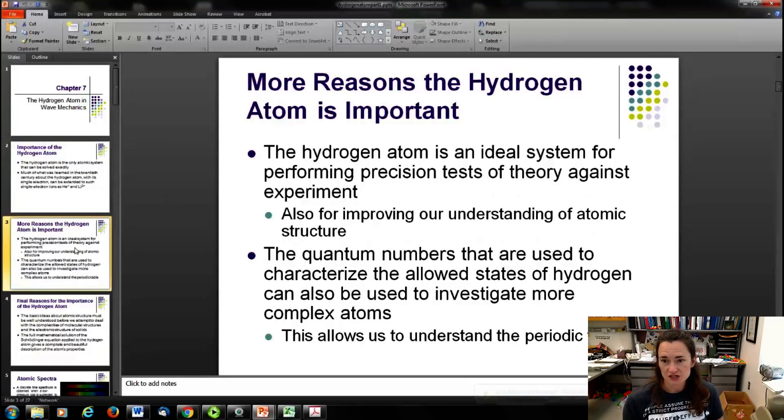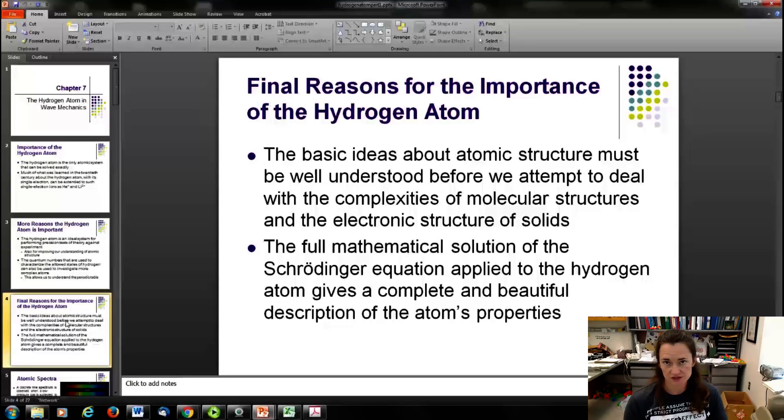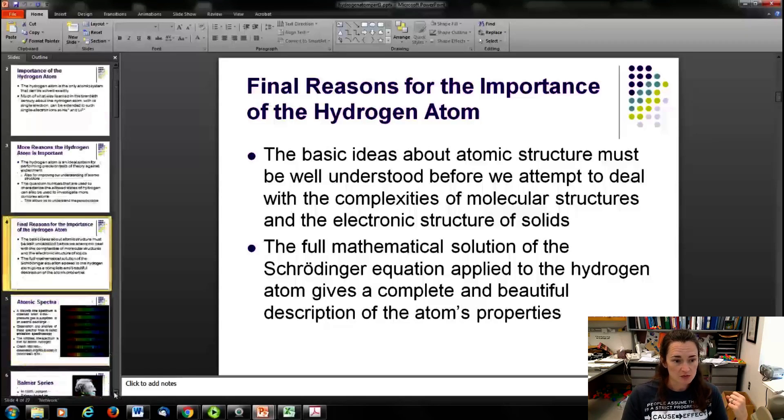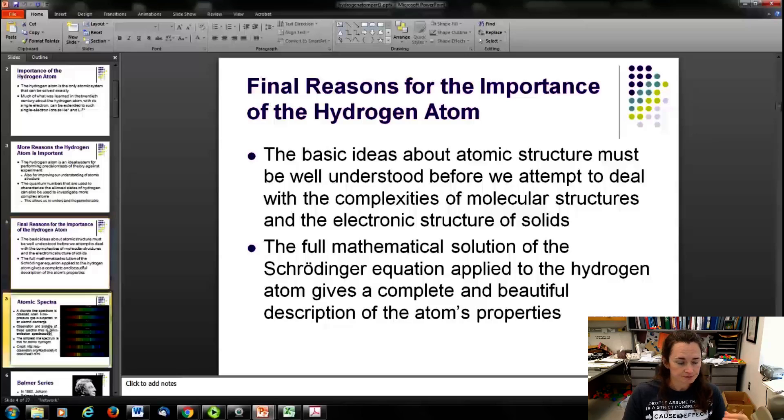The hydrogen atom was an ideal system for precision tests of theory against experiment. The quantum numbers that you use when you solve the hydrogen atom are the same quantum numbers that are used for every other atom in the periodic table. This development allows us to understand the atoms in their place in the periodic table and why they behave as they do. We have to really understand atomic structure before we attempt to deal with bonding in atoms or electronic structures of solids. The full mathematical solution of the Schrödinger equation applied to the hydrogen atom is really pretty beautiful and complete.